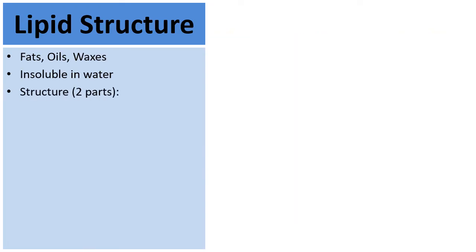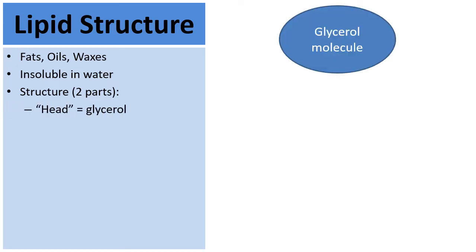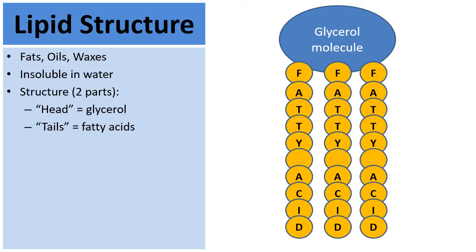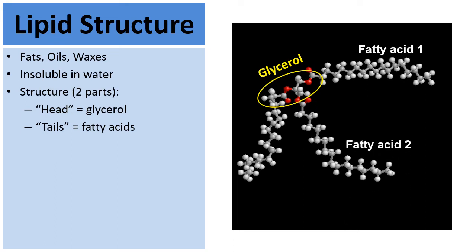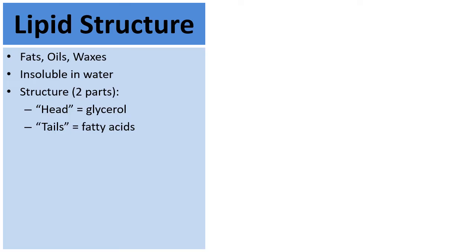When it comes to lipids, let's talk about their two building blocks. There's a head that we call the glycerol molecule, and then attached to the glycerol, dangling down, are some tails called fatty acids. Here's a very generic drawing of a lipid, and a more realistic drawing shows the glycerol head with fatty acid 1, fatty acid 2, and fatty acid 3.